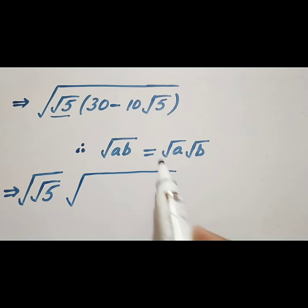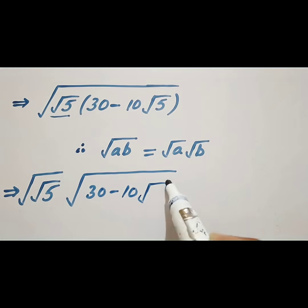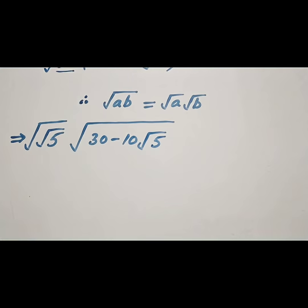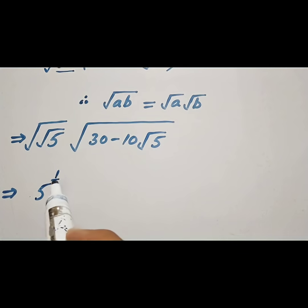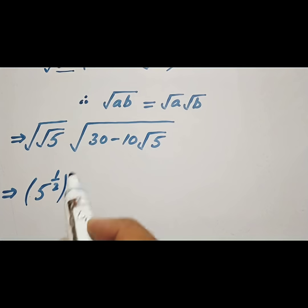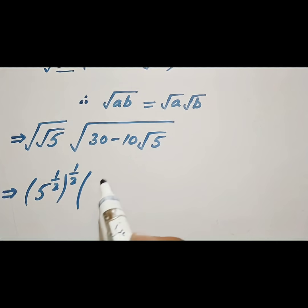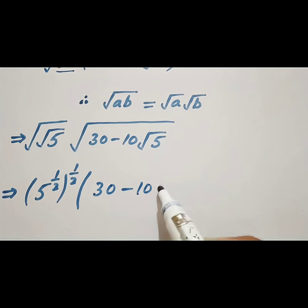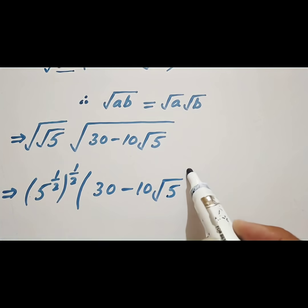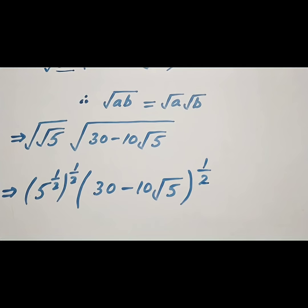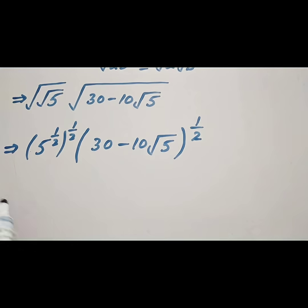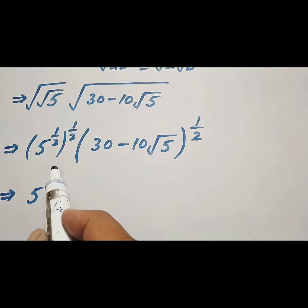So we have 30 minus 10 into 5, raised to the power 1 by 2. We know that the square root is equal to the power 1 by 2. Then 5 to the power 1 by 2 multiplied by 1 by 2, which is equal to 1 by 4.